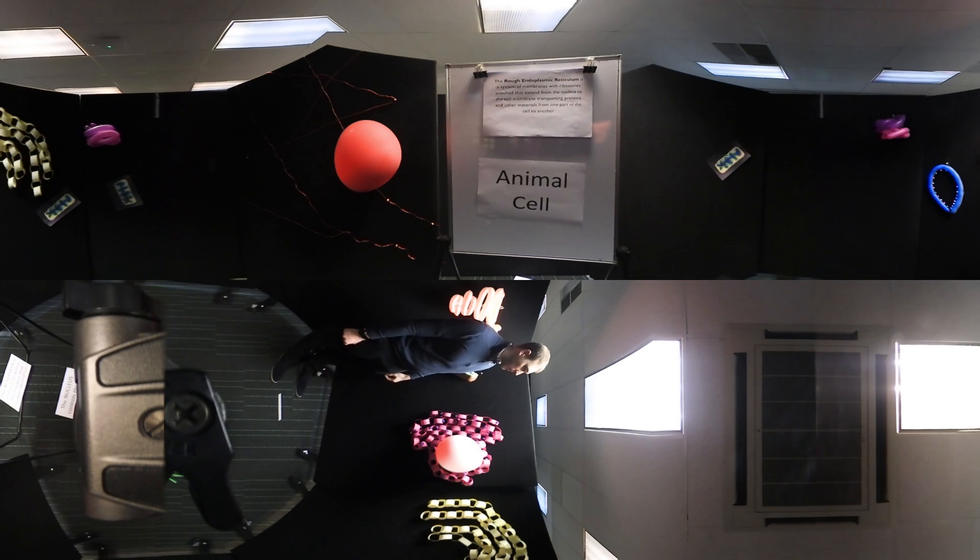The rough ER is a system of membranes that extends from the nucleus to the cell membrane. It's studded with ribosomes. Again, you wouldn't be able to see them on this scale. It's studded with ribosomes and they make proteins. So its job is to make proteins, package them, fold them a little bit and send them either around the cell or to other cells by extending to the cell membrane and kicking them out.